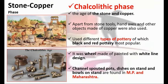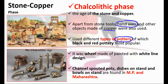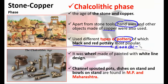Apart from stone tools, hand axes and other objects made up of copper were also used during this time. The Chalcolithic people used different types of pottery, of which black and red pottery was the most famous and most popular at that time. Around 2000 BC, we come to know about the Ahar culture.